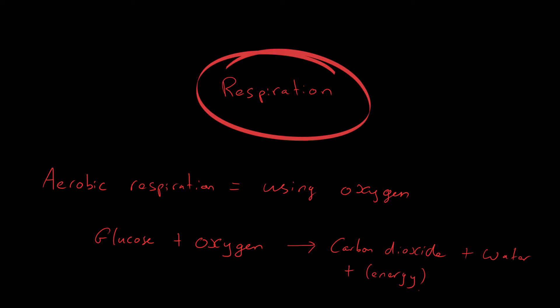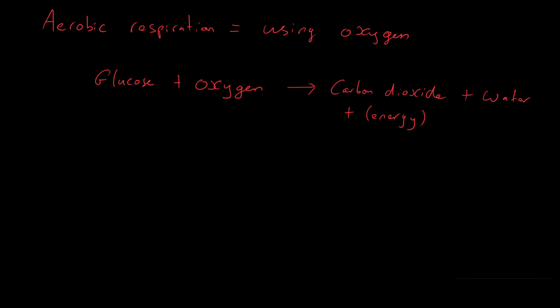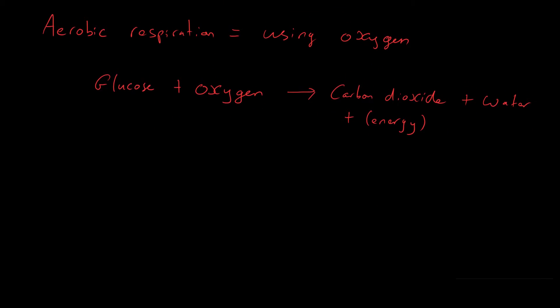Where does respiration happen? It occurs in the cells — not just in the lungs. It occurs in almost all of the cells inside your body. The lungs are the way we get oxygen, but then the blood ships that oxygen around to the rest of the body, so all your cells need to use that for respiration.